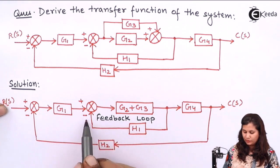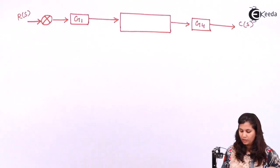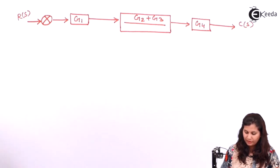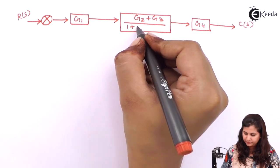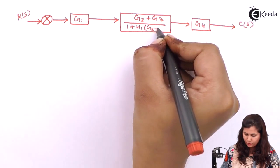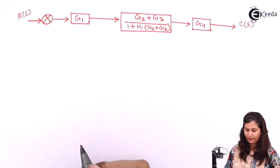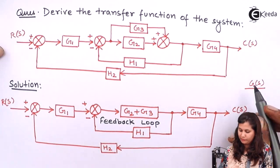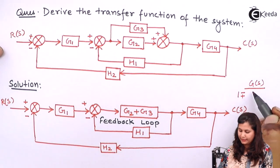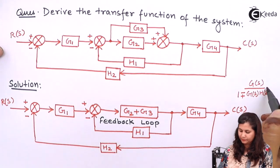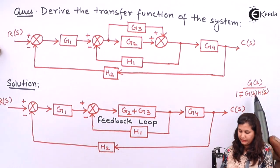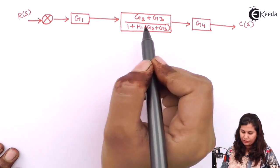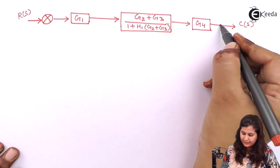Minus sign is there because H1 is having a minus sign here, so it is a negative feedback loop. Because it is the negative feedback loop, we have the rule: G(s) upon 1 plus G(s)H(s). Whenever we have a positive sign we take negative here, and whenever we have a negative sign we take positive here. So we are taking positive in this transfer function, giving us 1 plus H1(G2 plus G3) in the denominator.